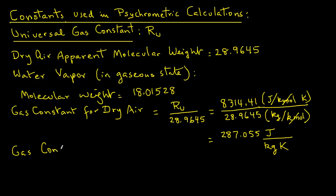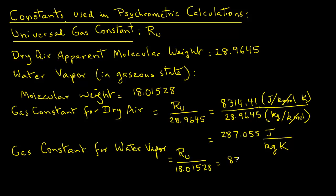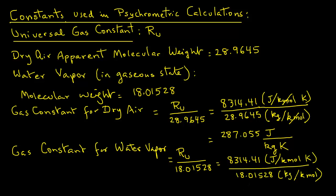Similarly, the gas constant for water vapor equals 8314.41 joules per kilomole kelvin divided by 18.01528 kilograms per kilomole. Again, kilomoles cancel out, giving 461.520 joules per kilogram per kelvin.